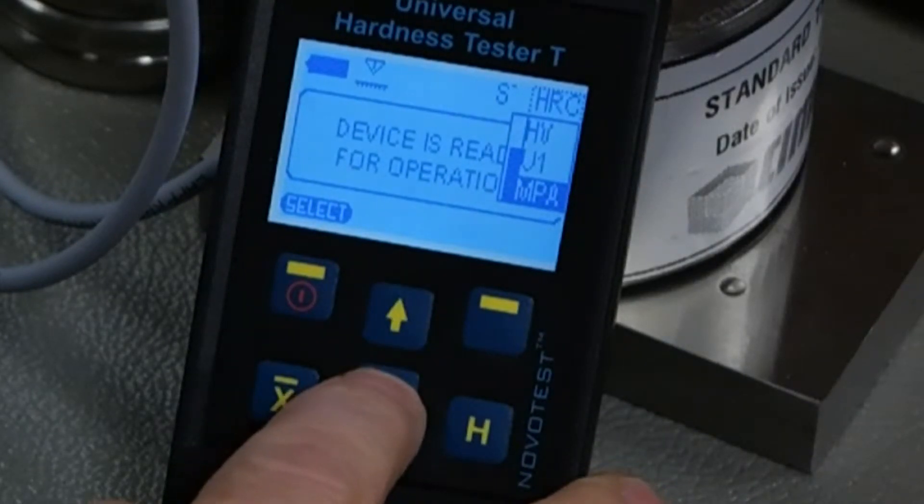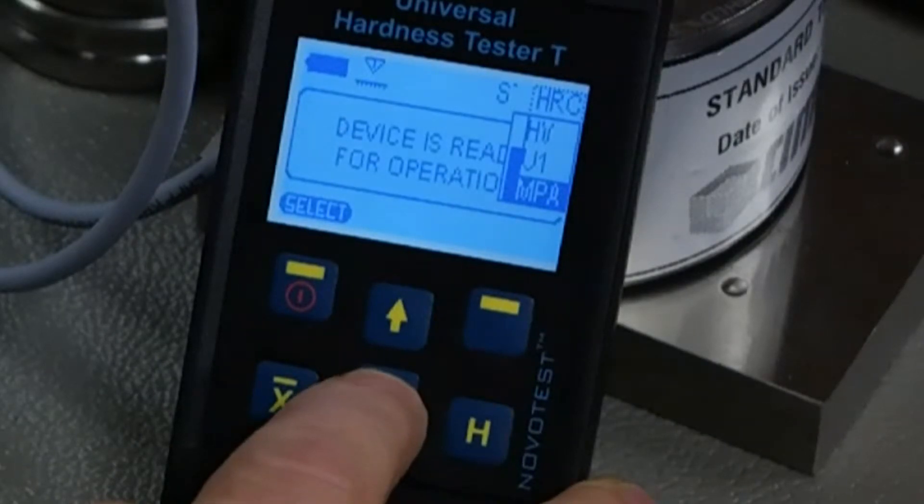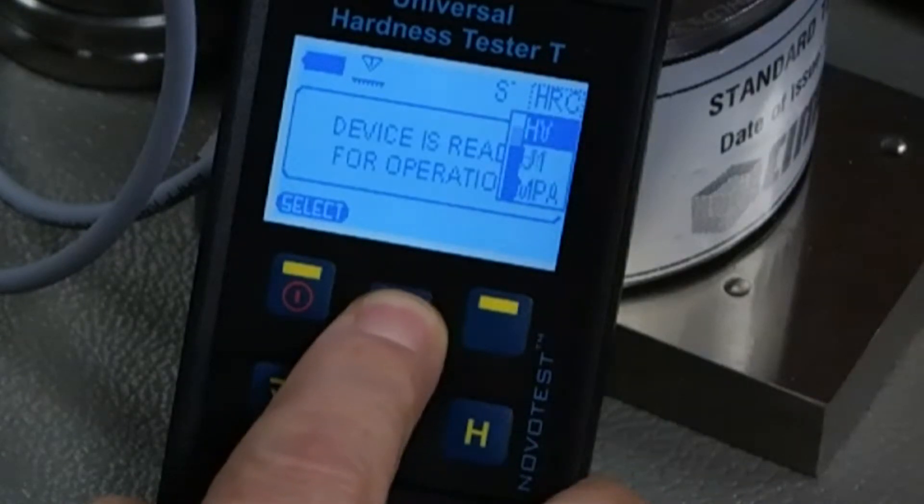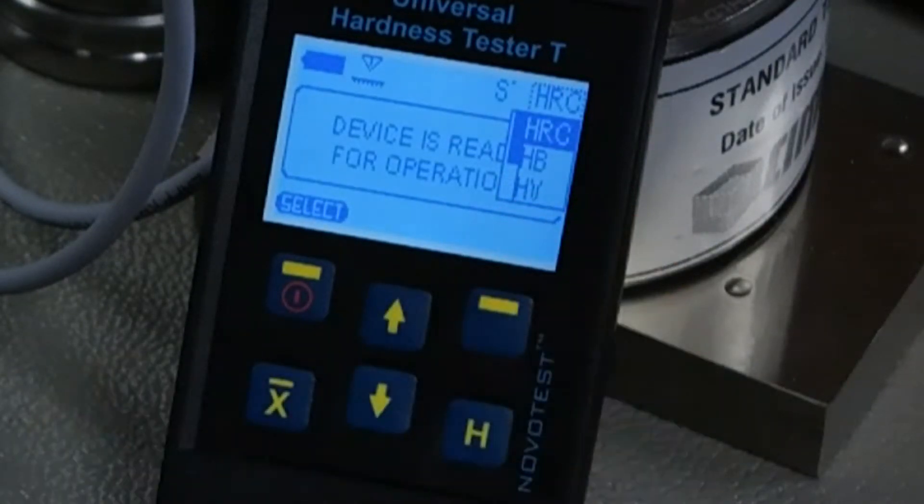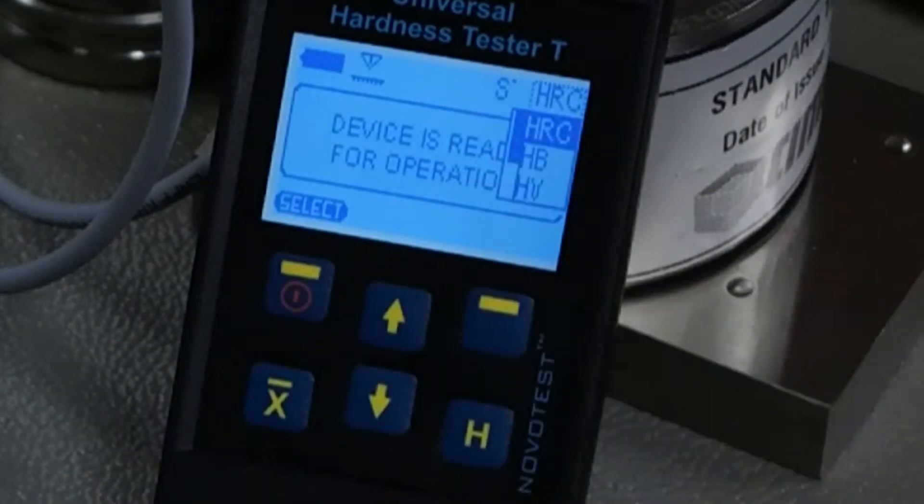Also for the tensile strength, the material is taken from the Brinell values to give a very close approximation of the tensile strength of the material. Now the fact that these are shown here at HRC, HB and so on, and we can have different material types, right now it's just steel.